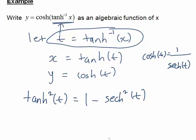Remember that tanh squared t is just tanh of t all squared. Because we know x was tanh of t, tanh squared t can be rewritten as x squared. So x squared equals 1 minus sech squared of t.